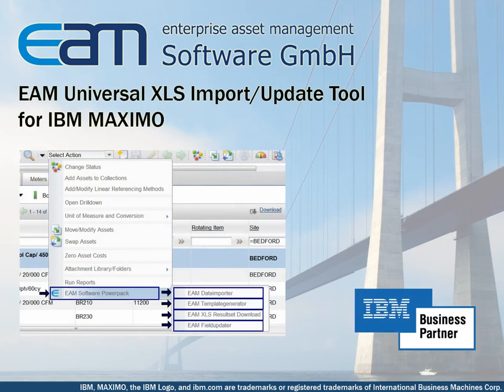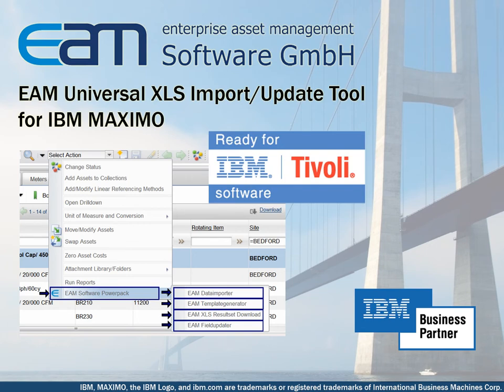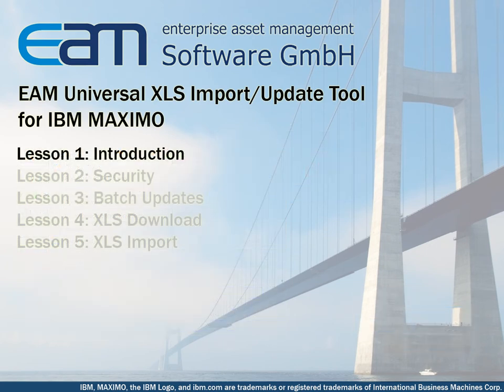EAM proudly presents the Universal XLS Import Update Tool for IBM Maximo. XLS is the popular file format for Microsoft Excel but it is also used in other systems, for example in OpenOffice products. EAM developed a tool which integrates Maximo and Excel and enables you to export, import and edit data fast and easily. Since 2010, the tool is certified by IBM as Ready for Tivoli. In this lesson, Lesson 1, I will give you a short introduction to the tool's key features, examples of usage and the advantages you will gain by using it. If you are interested in more detailed information about the tool's features, please check out the other videos.